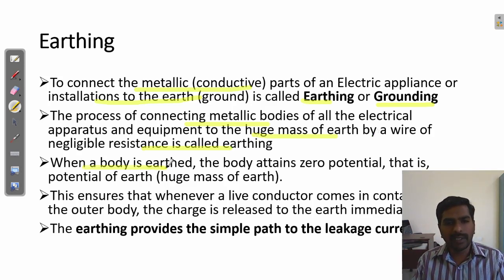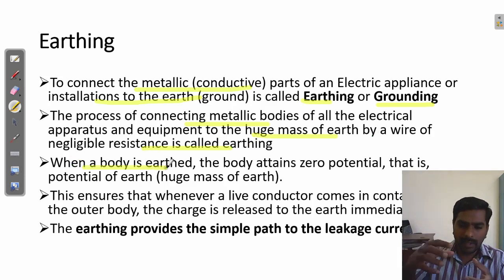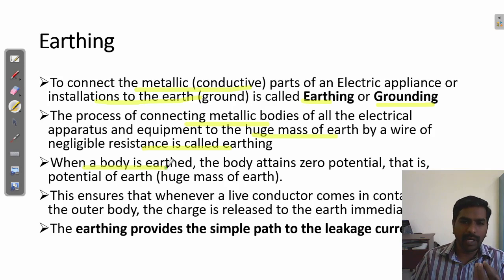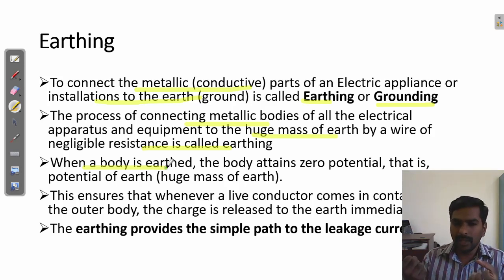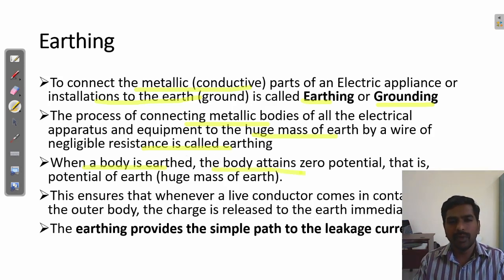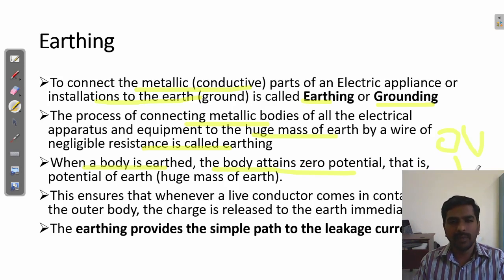When the body is earthed, the body is connected to Earth through a conducting wire. The mass of Earth is huge — that means it has zero potential, zero voltage. Zero voltage means it is like a ground. We have seen the ground symbol. Whatever current functions in this body — the Earth body — that is because it is zero potential. That is the potential of the Earth, the huge mass of the Earth.